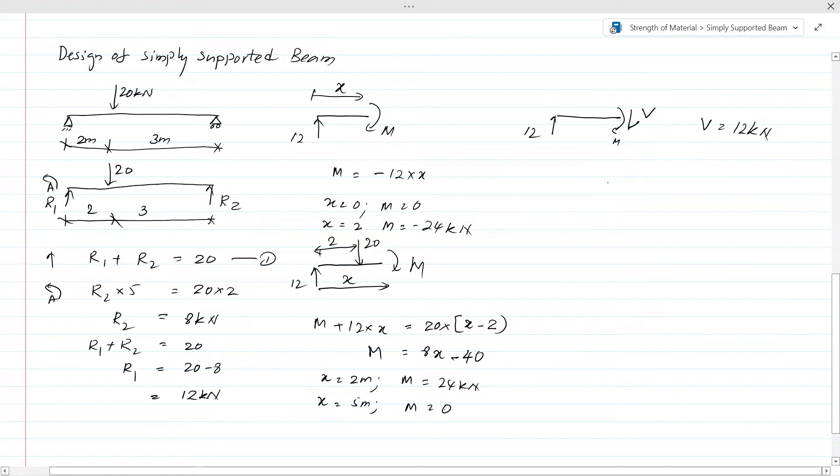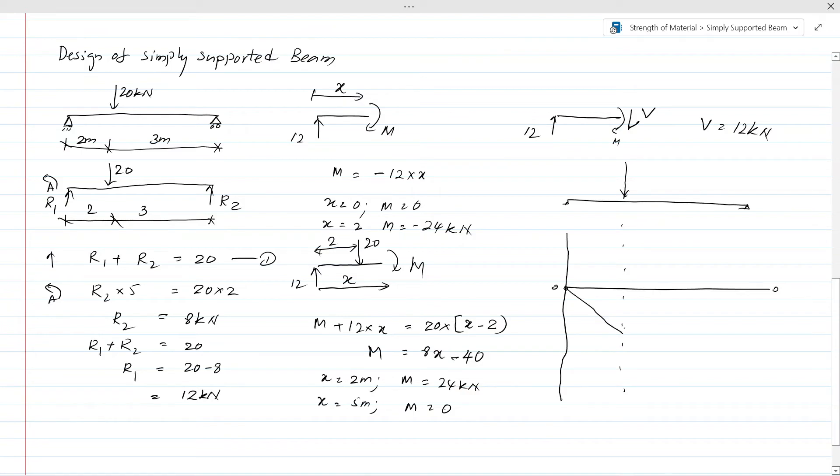Let's draw the bending moment and shear force diagrams. First, the bending moment diagram. At the supports, the bending moment is 0. The maximum bending moment of 24kN-m occurs at the point load.